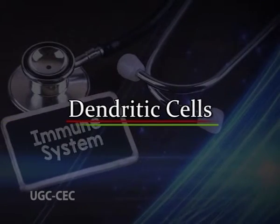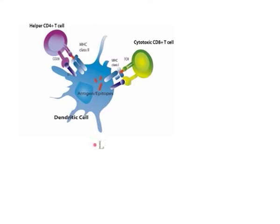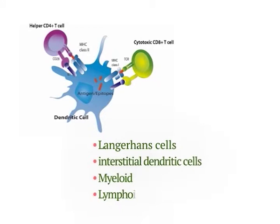Dendritic cells are derived from myeloid and lymphoid progenitors. Their main function is the presentation of antigens to T helper cells. Four types of dendritic cells are known: Langerhans cells, interstitial dendritic cells, and myeloid and lymphoid dendritic cells. Despite their differences, they all constitutively express high levels of class II MHC molecules and members of the co-stimulatory B7 family. Dendritic cells acquire antigens by phagocytosis, process them, and present them to T helper cells.